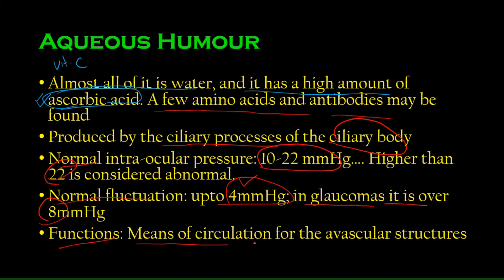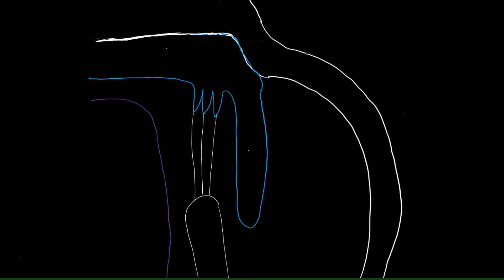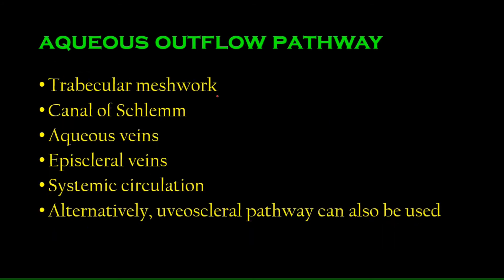The function of aqueous humor is to provide circulation for the avascular structures. The lens and cornea are both avascular — which is necessary because if blood ran through them, light passing through would appear red. Since these are living tissues that need nutrients, the aqueous humor provides both delivery of nutrients and removal of toxic waste.